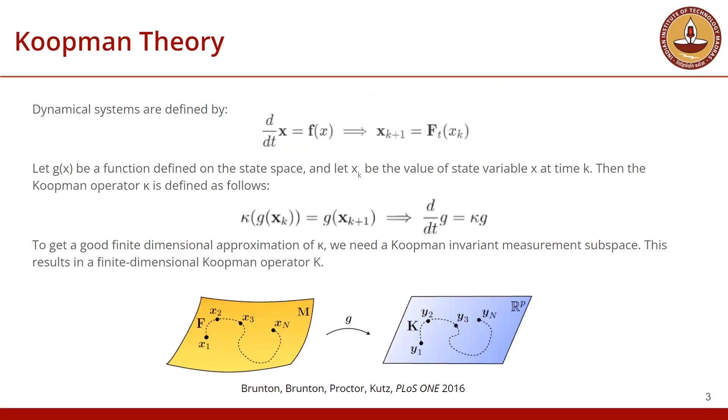Koopman operator is an infinite dimensional Hilbert space operator that propagates measurement functions G of a dynamical system forward in time, thus converting nonlinear dynamics to a linear framework but in an infinite dimensional space.